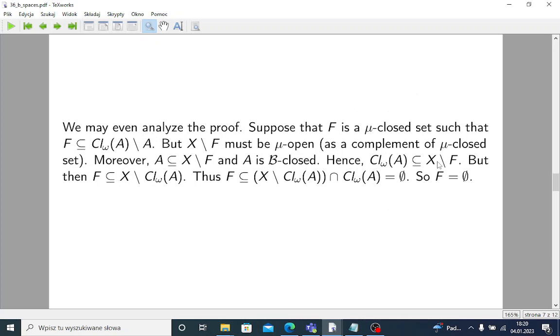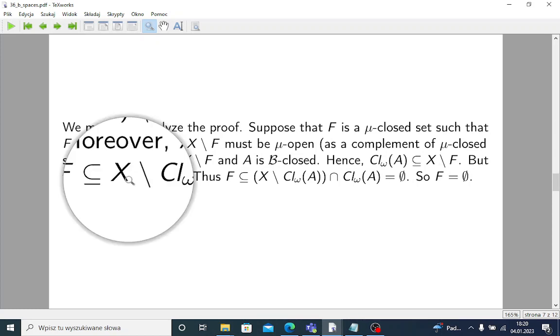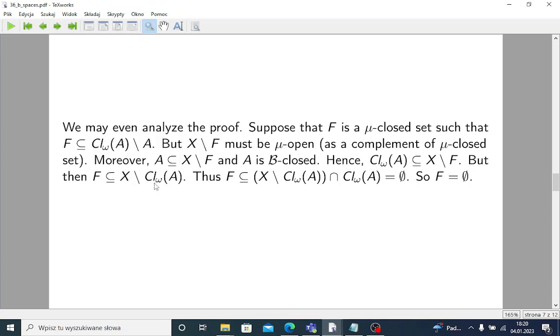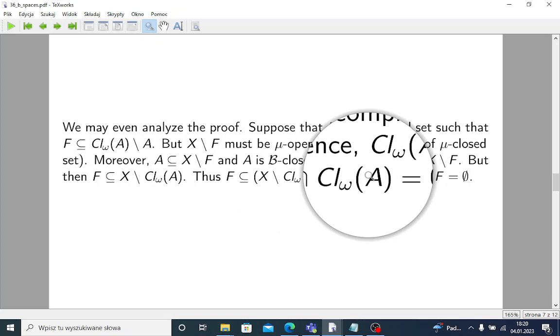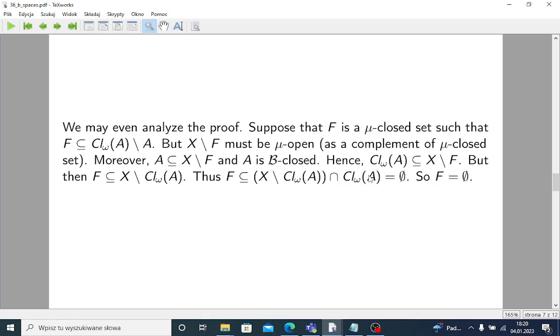But if so, then clearly, by set theoretical operations, F must be contained in X minus omega closure of A, in the complement of omega closure of A. So, F is contained both in the complement of omega closure of A and in omega closure of A. Well, in some sense, it's possible, but this intersection is empty. So, the only possible result is that F must be empty, too.